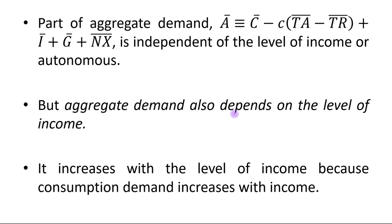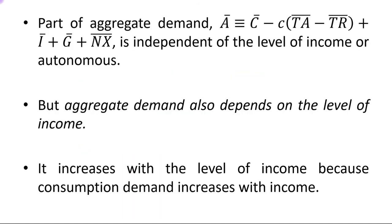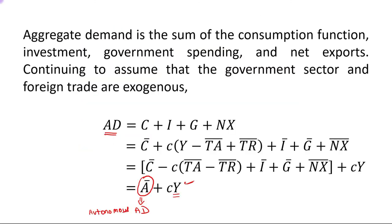Aggregate demand also depends on the level of income. Aggregate demand increases with the level of income because consumption demand increases with income. If Y increases, consumption demand will be increased by the fraction MPC, due to which aggregate demand will also increase.